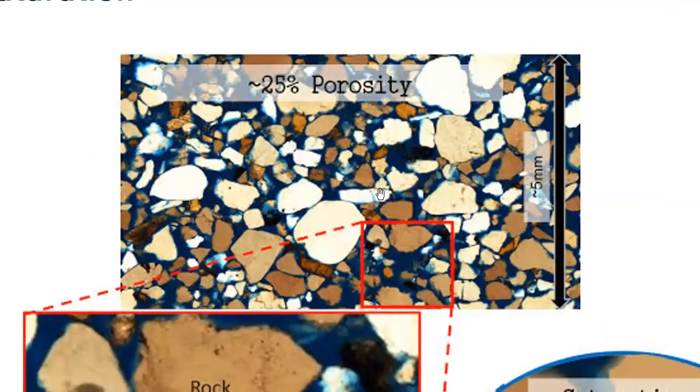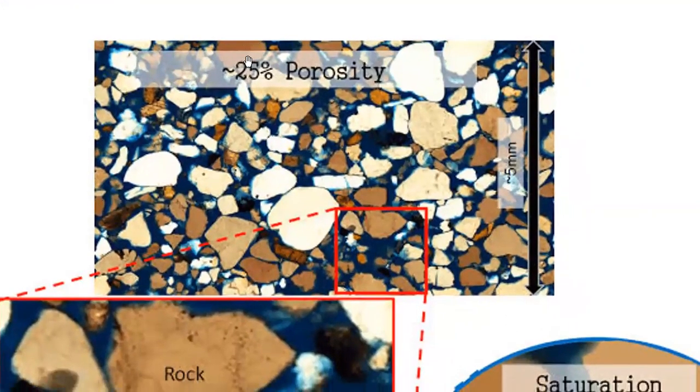You can see the rock grains in white or brown color. You can see the dark areas - those are the pores. But the pores are not empty. The pores are filled with fluid - jadi pori-pori itu tidak kosong, dia terisi with fluid. The fluid can be water, oil, or gas.